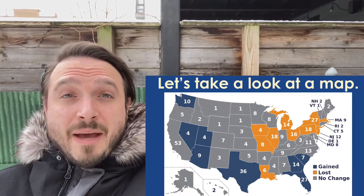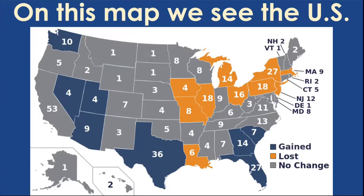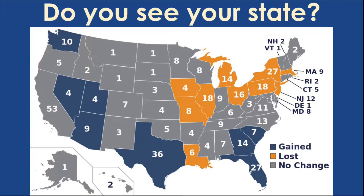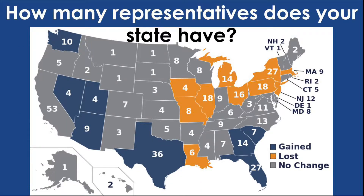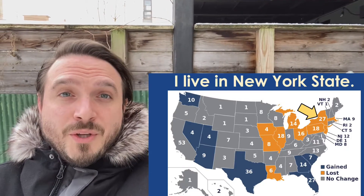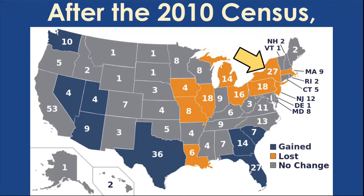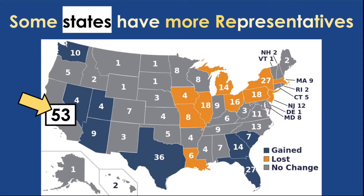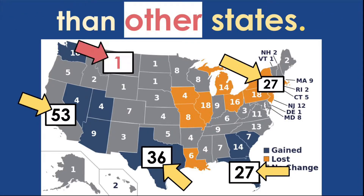Let's take a look at a map. On this map, we see the United States and the number of representatives in each state. Do you see your state? How many representatives does your state have? I live in New York State. After the 2010 census, my state has 27 representatives. On this map, we see some states have more representatives than other states.